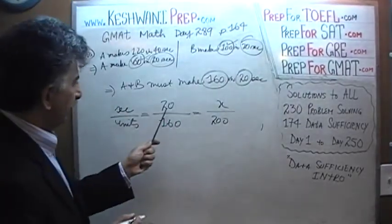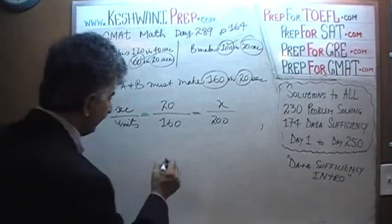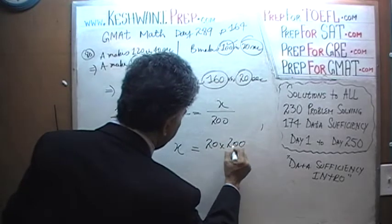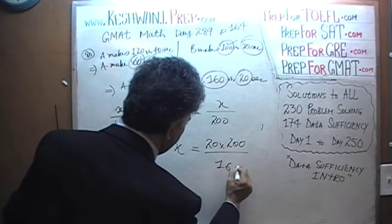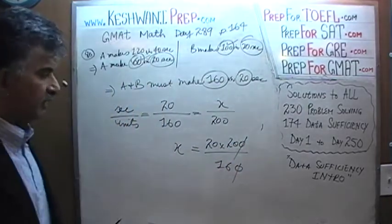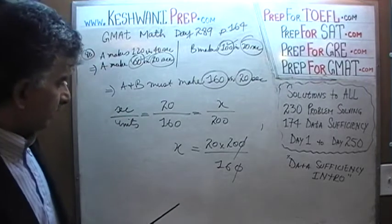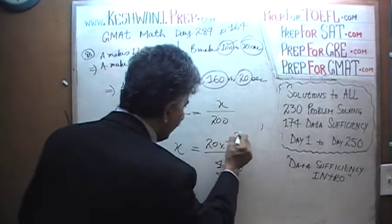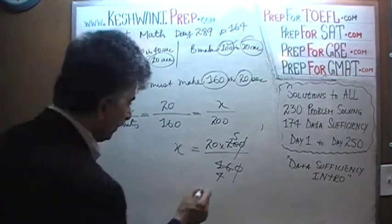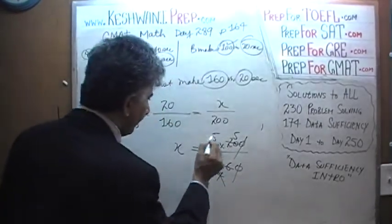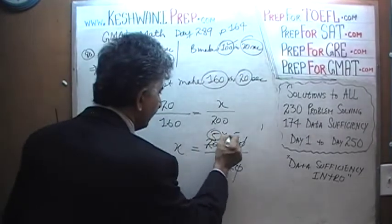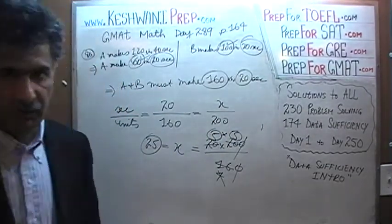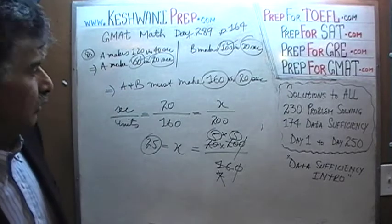X equals 20 times 200 divided by 160. Divide top and bottom by 10, then divide top and bottom by 4 twice: that gives 5 times 5, which is 25 seconds. It will take them 25 seconds to make 200 units.